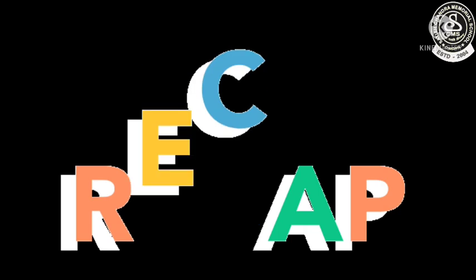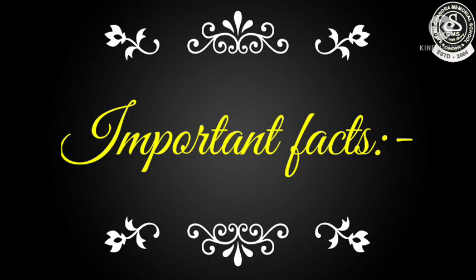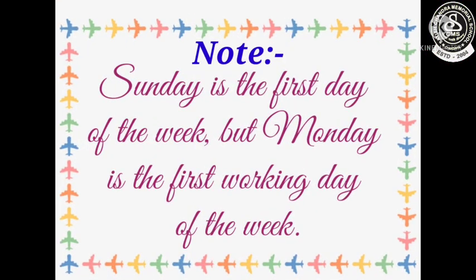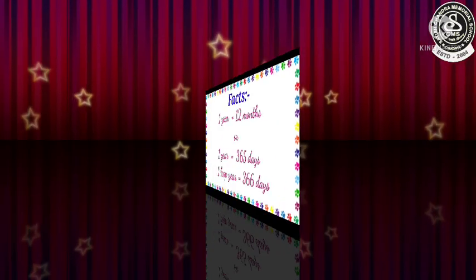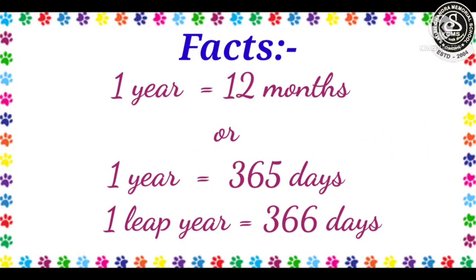Now, let us recap the important facts. Sunday is the first day of the week, but Monday is the first working day of the week. One week is equal to seven days. One fortnight is equal to 14 days. One year is equal to 12 months, or one year is equal to 365 days, and one leap year is equal to 366 days — that is one more than 365 days.